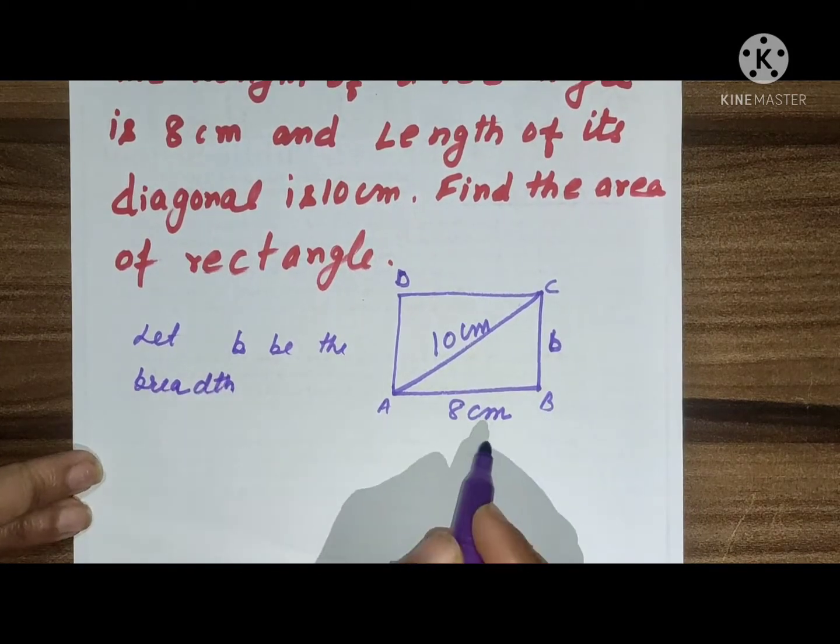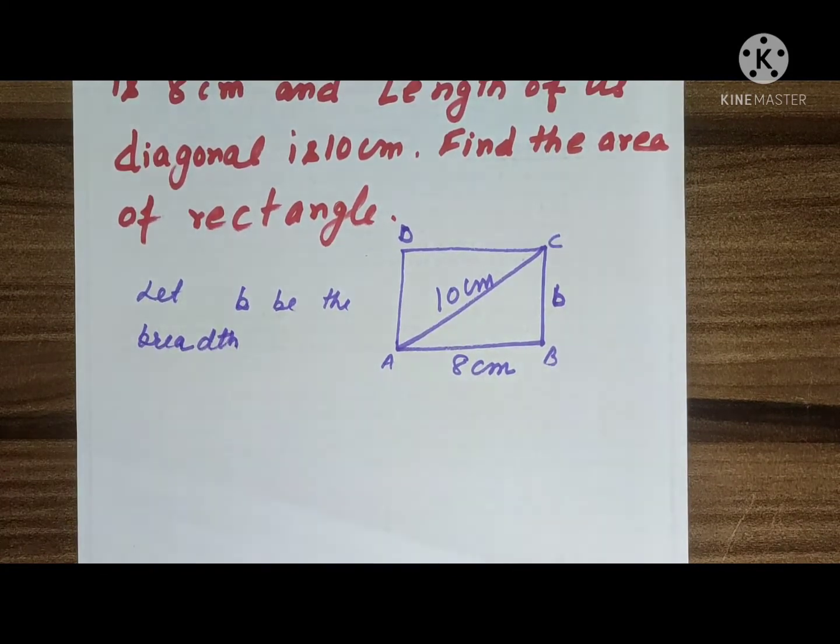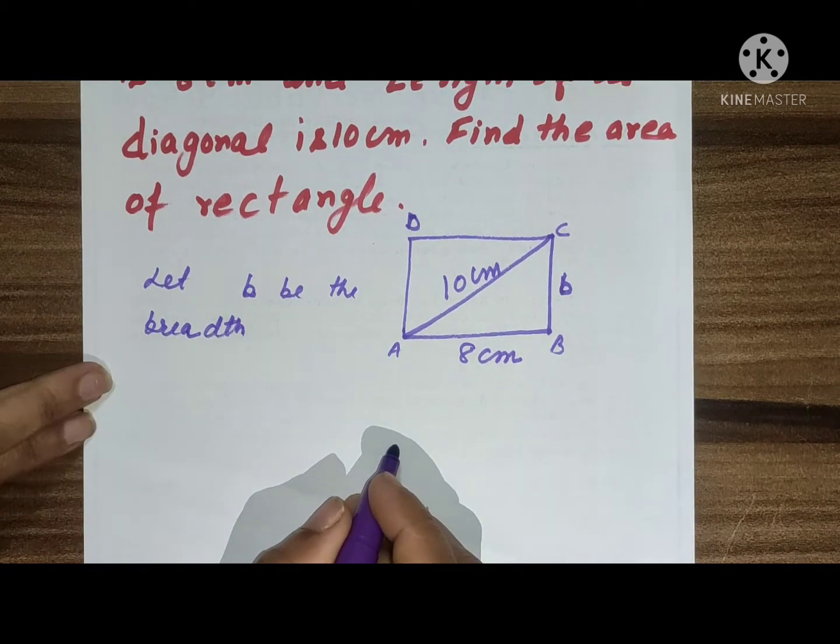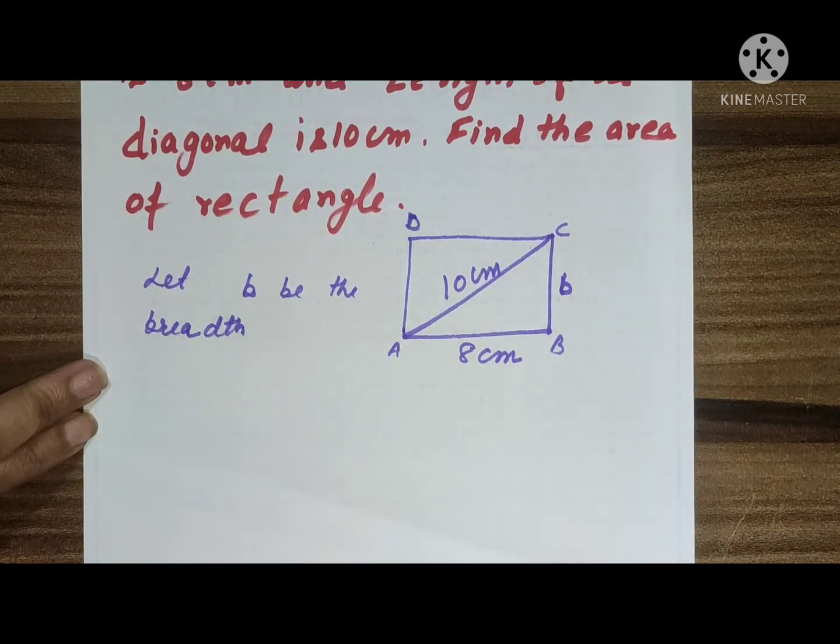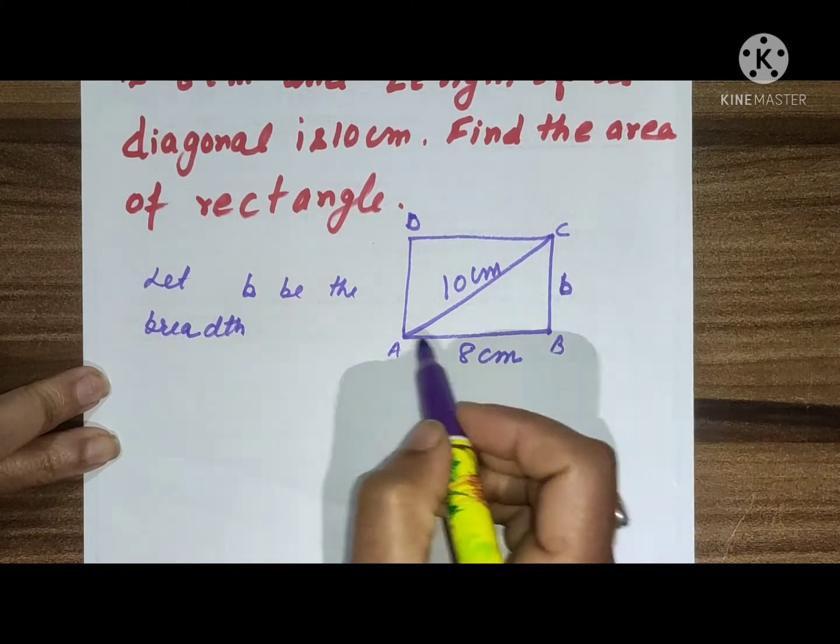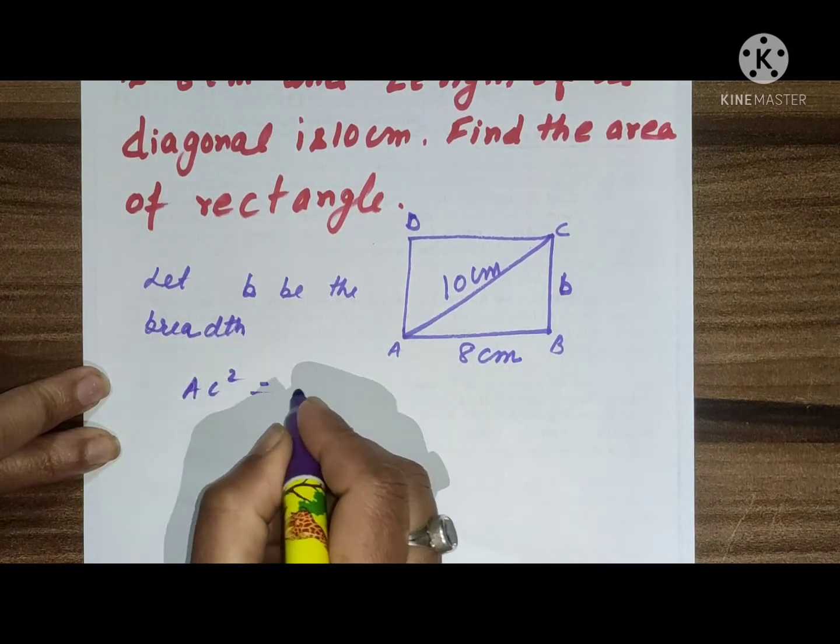We will use the Pythagoras theorem. I have made a video already on this Pythagoras theorem. If you have doubt you can check my videos. We will take triangle ABC. Here AC² equals, by using Pythagoras theorem, AC² = AB² + BC².